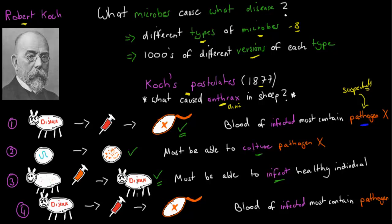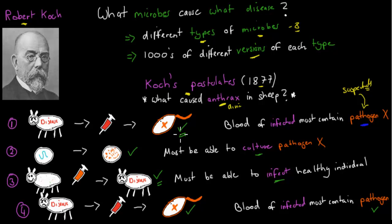Then there was one more step: take blood from the newly diseased animal and confirm that the same exact pathogen is present. That's the proof. If all four steps are satisfied, that is proof that this specific bacteria — in this case Bacillus anthracis — caused this specific disease, which was anthrax.